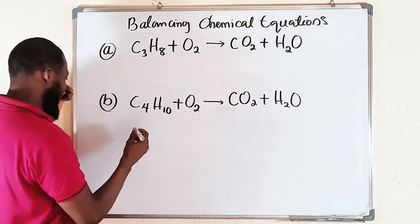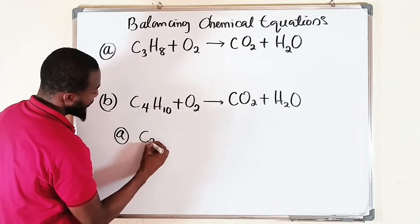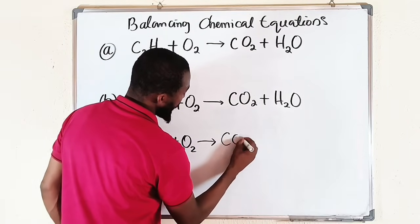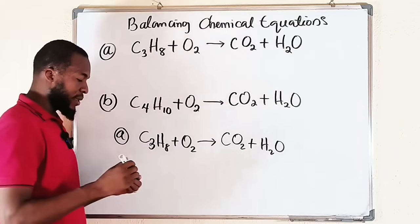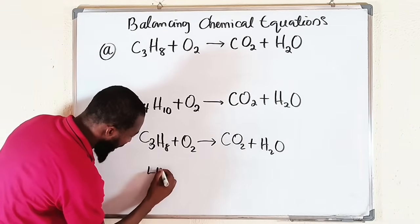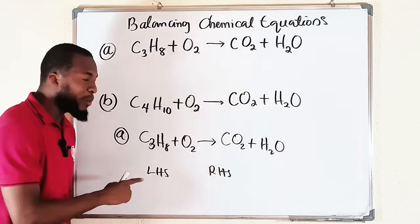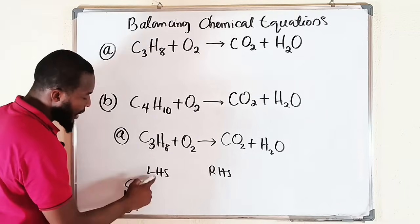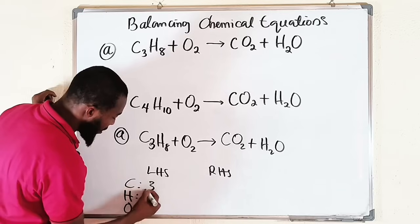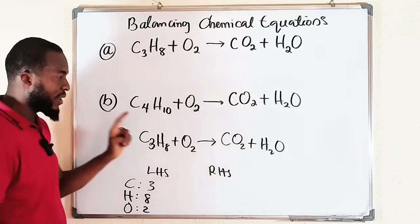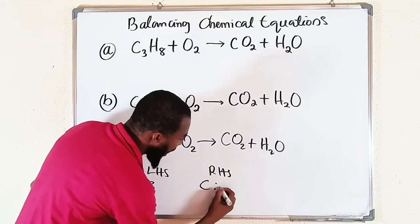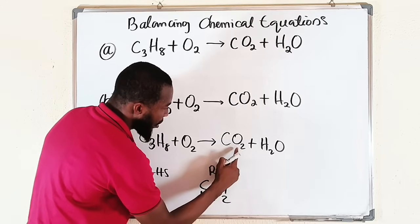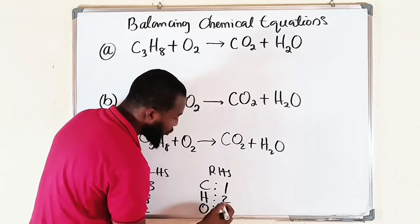Let me take the first equation: C₃H₈ + O₂ → CO₂ + H₂O. Looking at the left-hand side and right-hand side, we have three elements: carbon, hydrogen, and oxygen on both sides. On the left we have 3 carbon atoms, 8 hydrogen atoms, and 2 oxygen atoms. On the right we have 1 carbon, 2 oxygen for CO₂, 2 hydrogen, and 1 oxygen for H₂O — making 3 oxygen total. They are clearly not balanced.